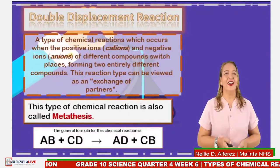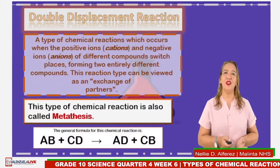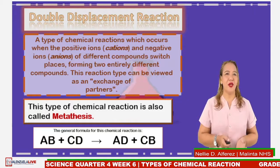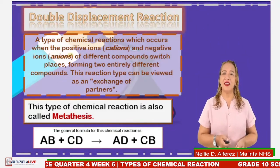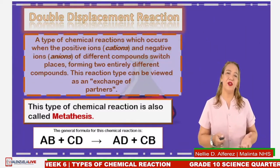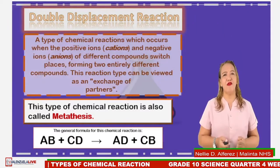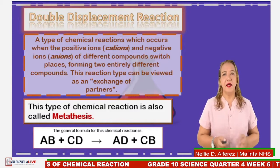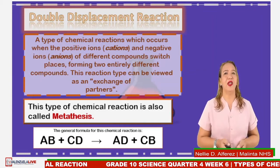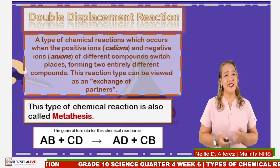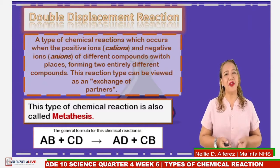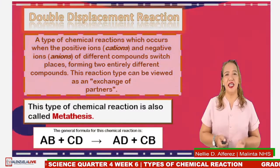The fourth type is double displacement reaction, or double replacement reaction. This is a type of chemical reaction which occurs when the positive ions (cations) and the negative ions (anions) of different compounds switch places, forming two entirely different compounds. These reactions can be viewed as an exchange of partners, also called metathesis. The general equation is: AB reacts with CD yields AD plus CB.